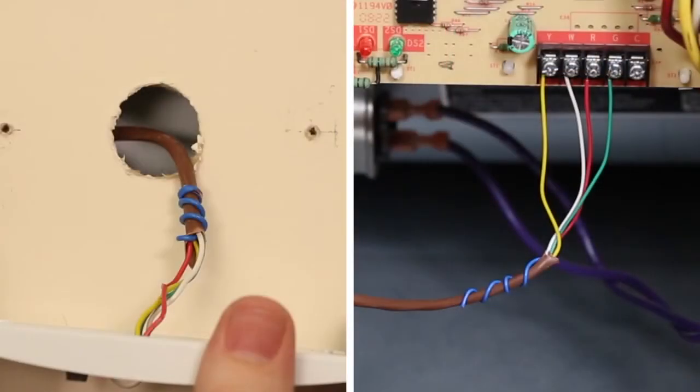In most cases, this unused wire should be the same color as the unused wire at your thermostat. This unused wire may be wrapped around the wire bundle, wire nutted, or taped off.